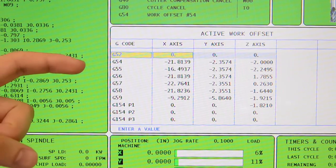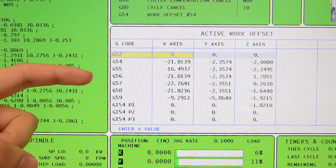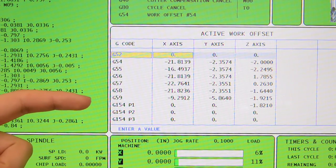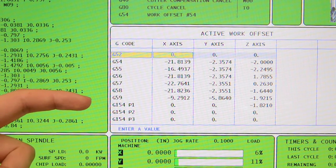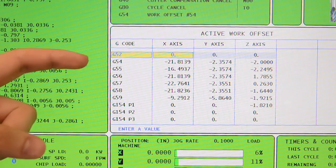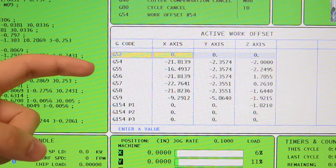In the lab, we don't actually program with G54. We use our other offsets G55 through G59 when programming in SURFCAM. The reason is we don't want to accidentally overwrite G54 because that's specially programmed.